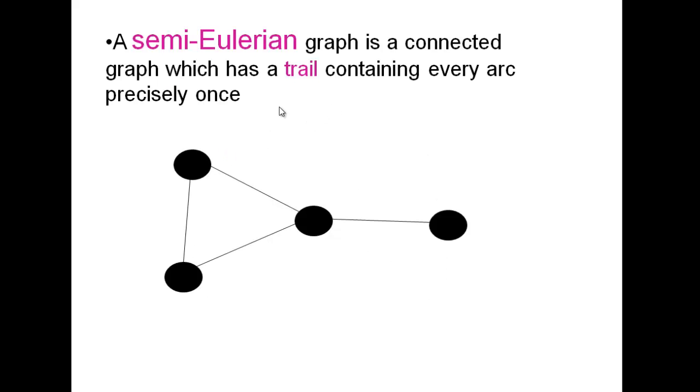A semi-Eulerian graph is a connected graph which has a trail containing every arc precisely once. Not a closed trail, but we can traverse the whole graph, though we would start and finish at different points. We'll look in a bit more detail about the properties of the points we need to start and finish on in the lesson.